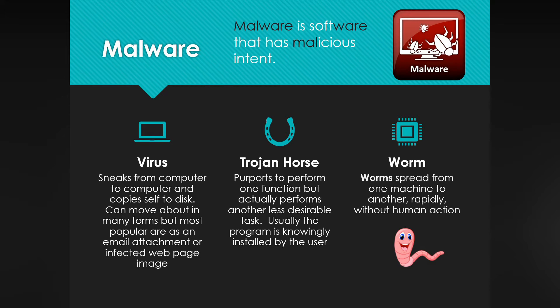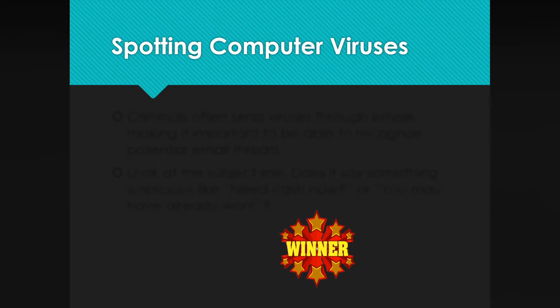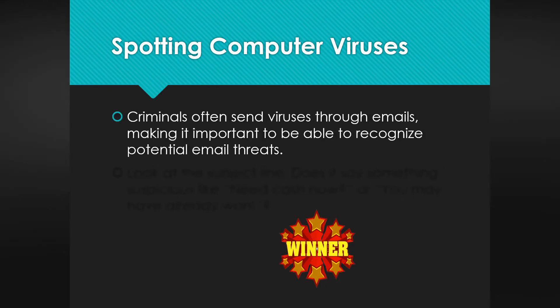A Trojan horse purports to do one function but actually performs another less desirable task — usually the program is knowingly installed by the user. A worm spreads from one machine to another rapidly without human action, so usually the computer user doesn't know it's there.